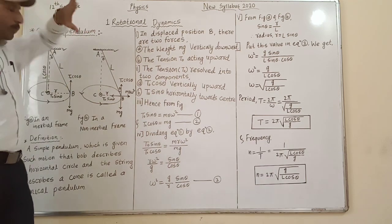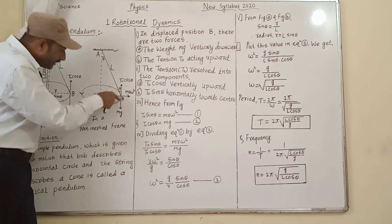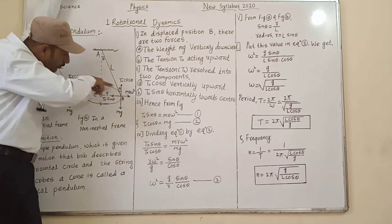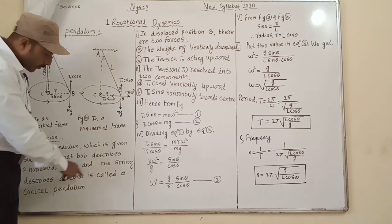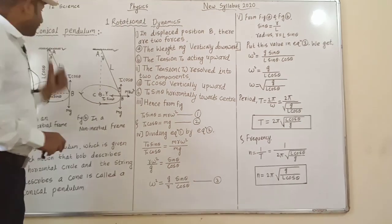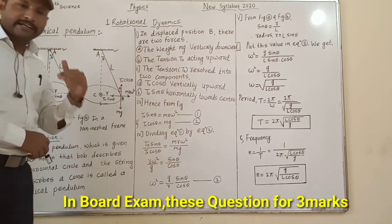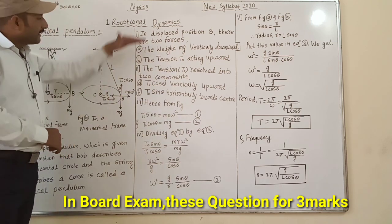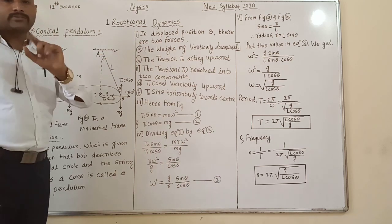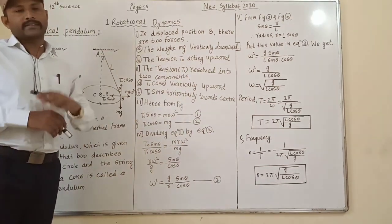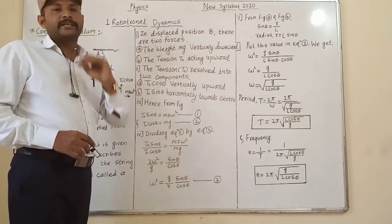Remember, there are two key points: the bob describes a horizontal circle, and when the bob describes the horizontal circle the string makes an angle, forming a cone — that is called a conical pendulum. There are also vertical and horizontal components present. In the board examination, the theoretical part carries half marks for diagram and the remaining equation part is for two marks, totalling three marks.